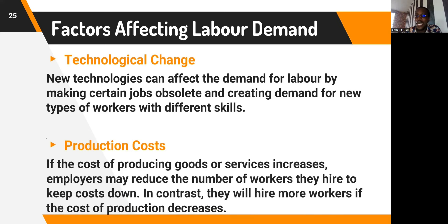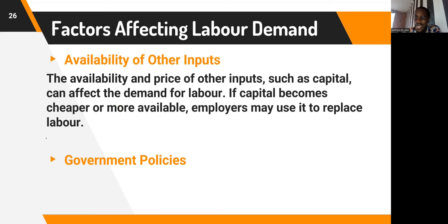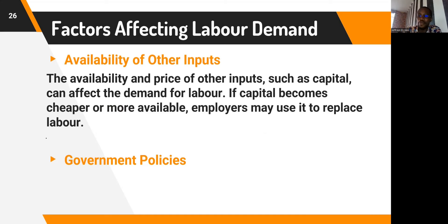Fourth, production costs: when the cost of production increases, the firm hires fewer workers to drive costs down. If production costs decrease, firms hire more workers. Fifth, availability of other inputs such as capital: if capital is more available or cheaper than labor, firms will employ more capital and reduce the number of workers, causing labor demand to fall.